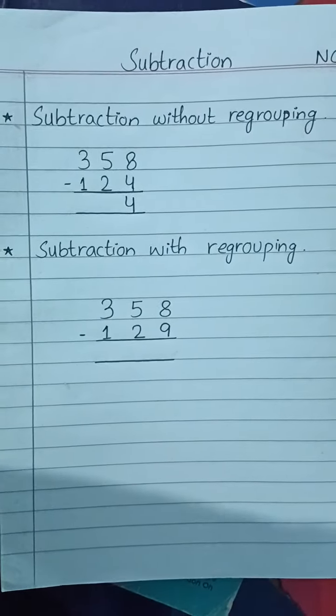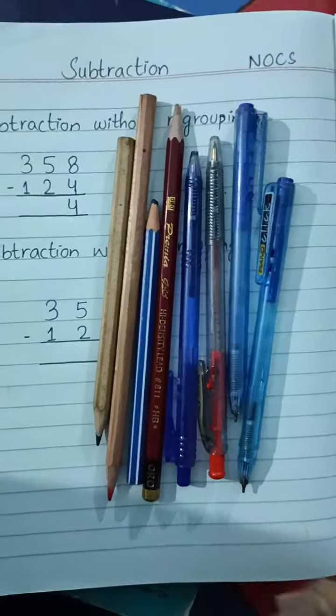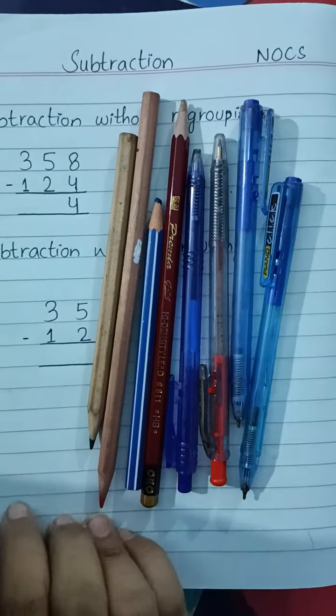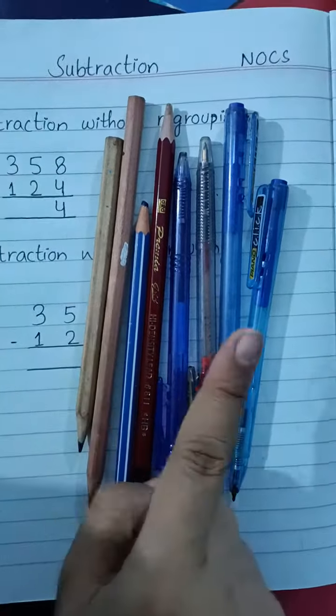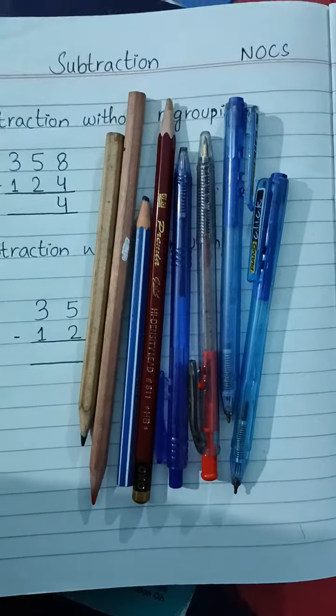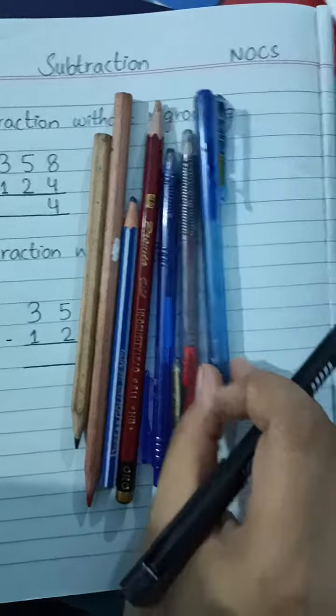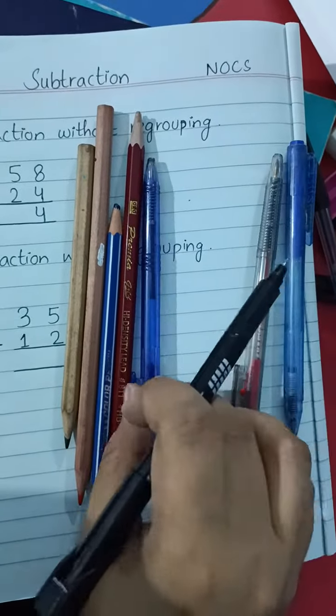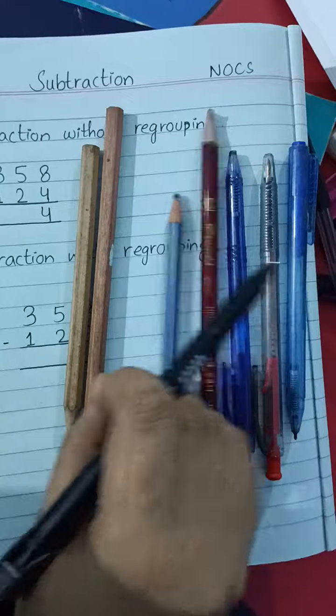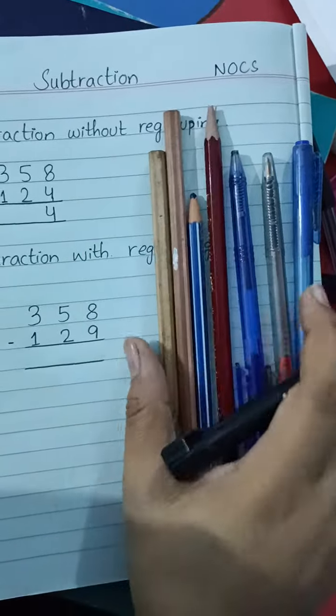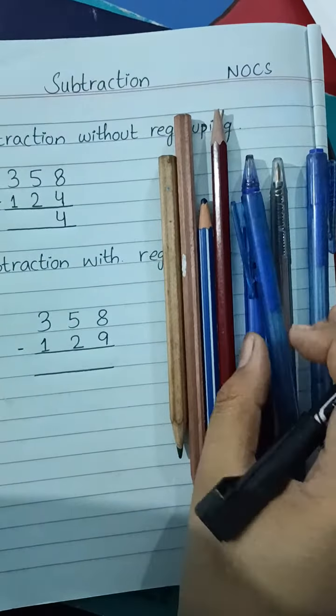8 minus 4 is 4. Here you can see I have 8 pens and pencils. Look at here: 1, 2, 3, 4, 5, 6, 7, 8. We have 8 pens and pencils.